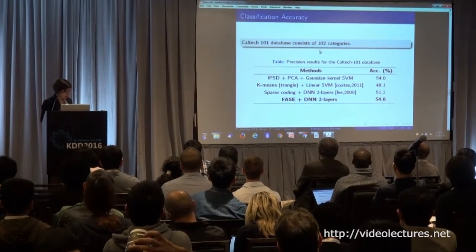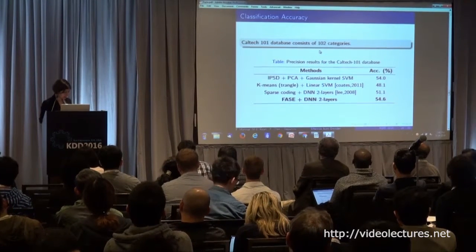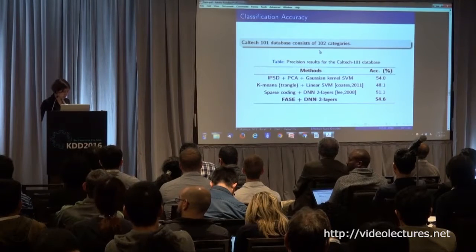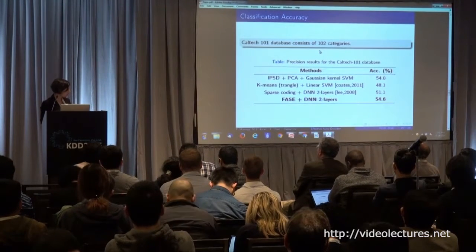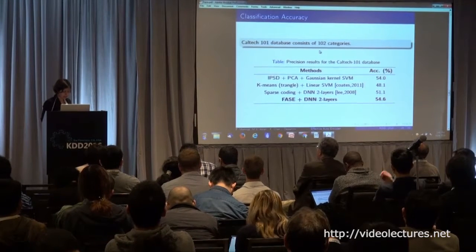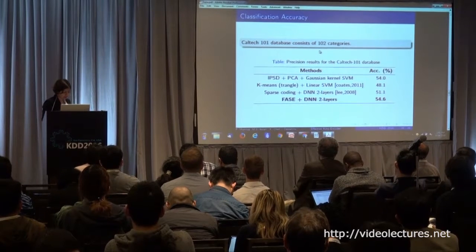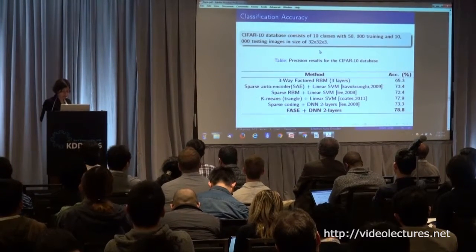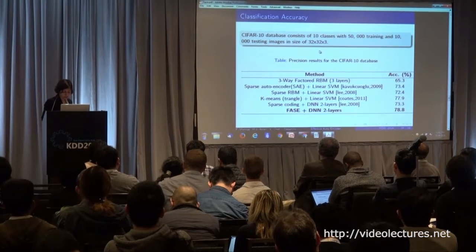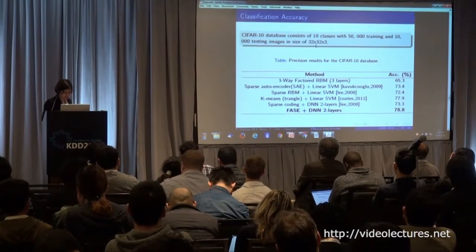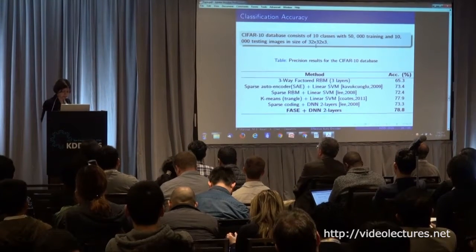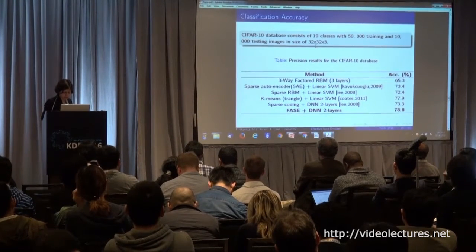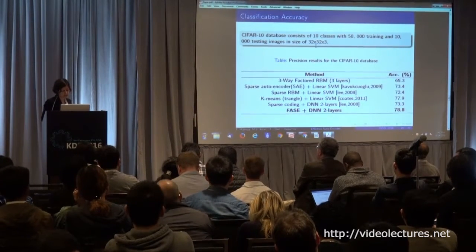We applied this algorithm on the Caltech database using the FASE module with a two-layer DNN. The classification results of this algorithm are higher than the other ones. We also applied it on the CIFAR database, achieving 78.8% accuracy, which is higher than competing methods, and the timing is also faster.